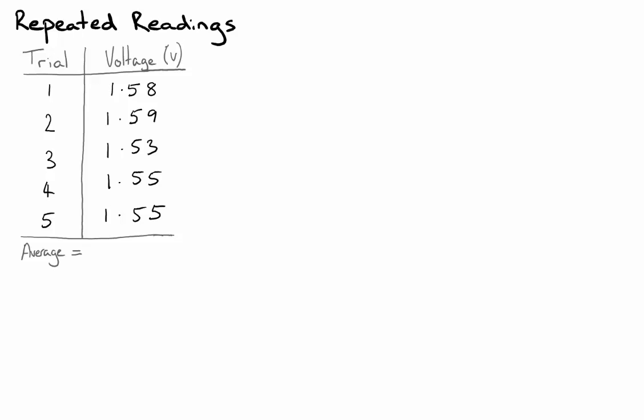We've already talked about how we can go a long way to reducing the effects of random error if we take repeated readings of the same thing, then average them, and we can work out by looking at the range of those repeated readings, the uncertainty of our final average value. There's a couple of steps to go through before we get there.